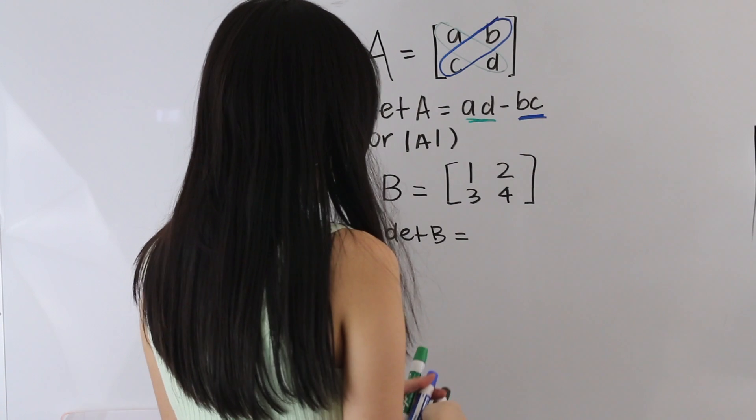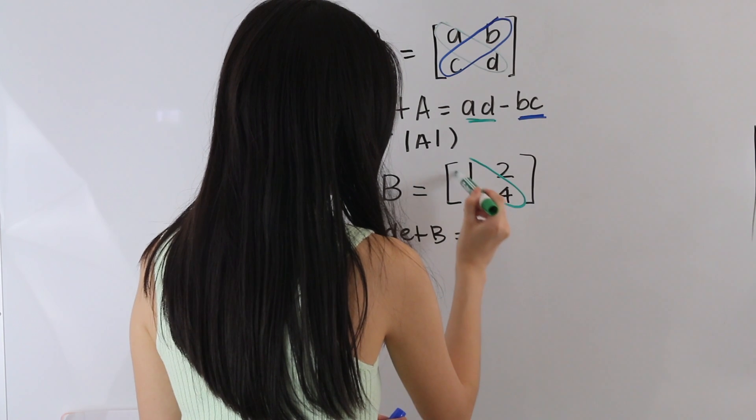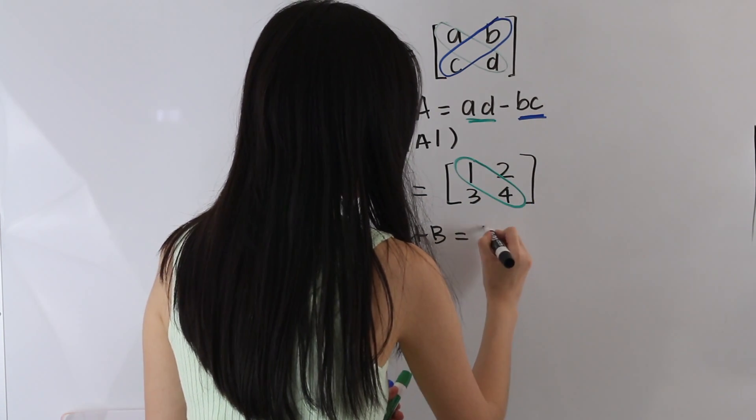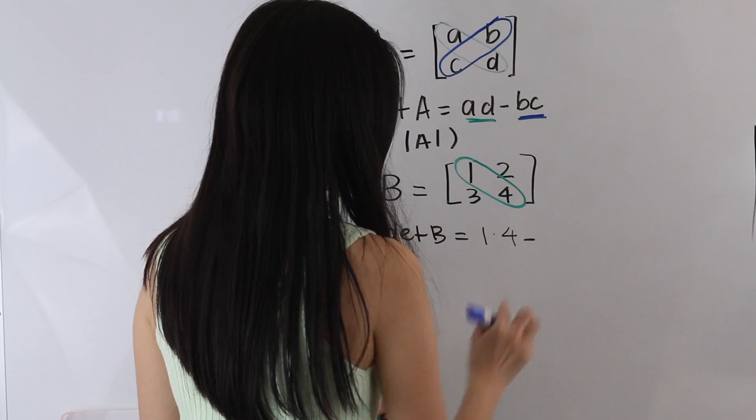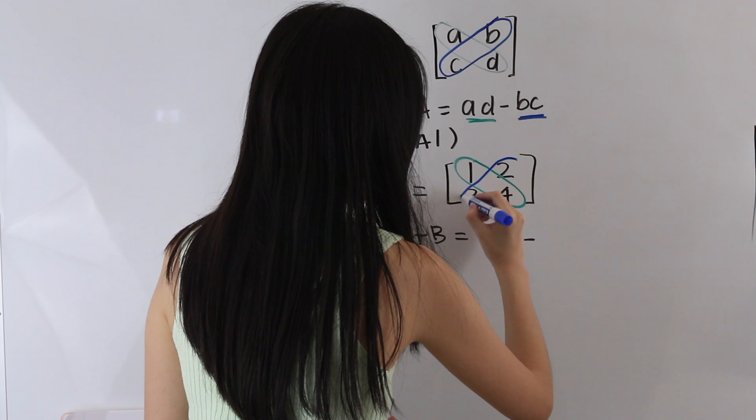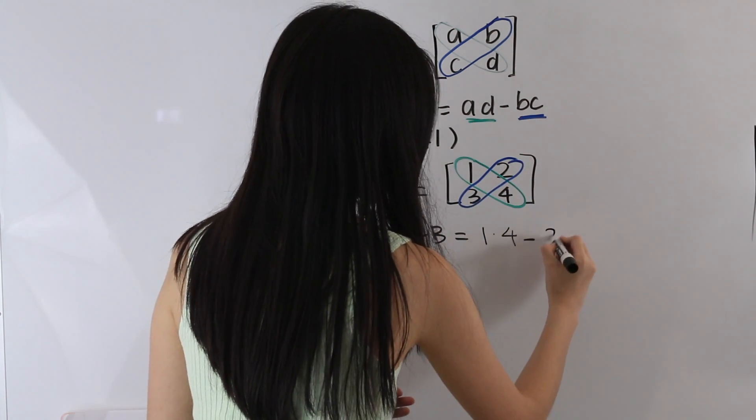So first, let's start off at the left-hand corner of our matrix, and let's circle the terms in this diagonal and multiply these two. So we have 1 times 4, and then we're going to subtract that by starting at the right-hand corner of this matrix here, this diagonal here. So that is 2 times 3.